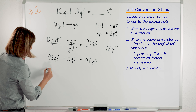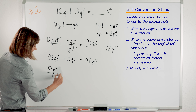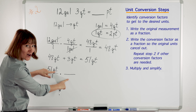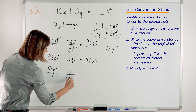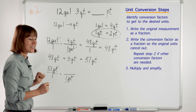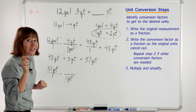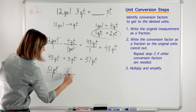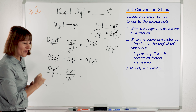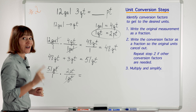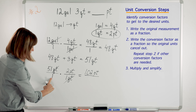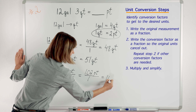51 quarts over 1, times the conversion factor — we plug it in to cancel our quarts. I put 1 quart on the bottom because I have quarts on top, so my original units cancel out. And I put 2 pints right here. Now we do the math: 51 times 2 is 102. And in the denominator, 1 times 1 is 1. So, 102 pints.